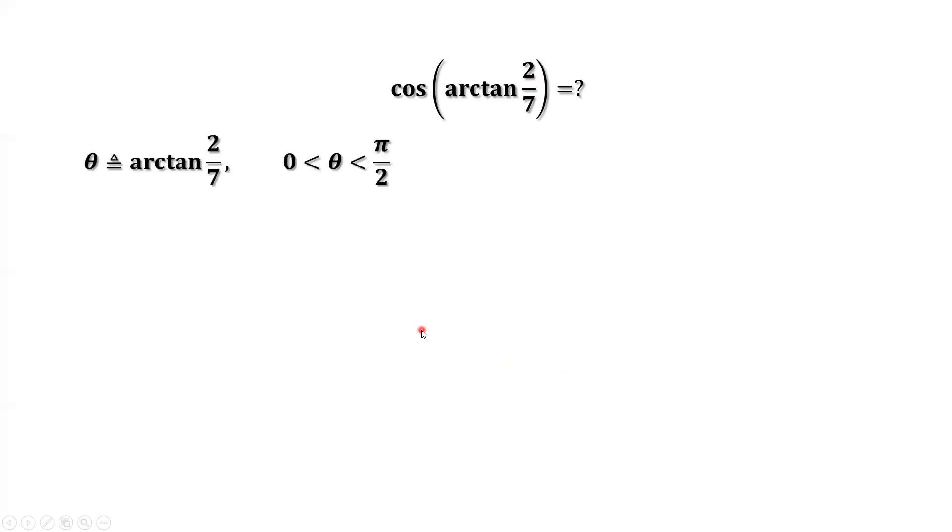By definition, tangent of theta equals opposite over adjacent. That's tangent of theta equals 2 over 7.